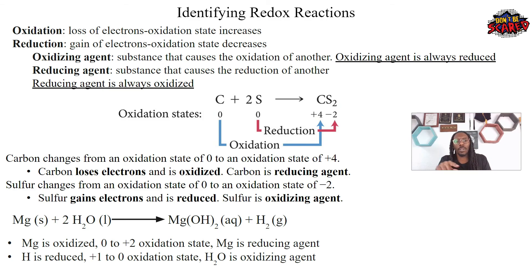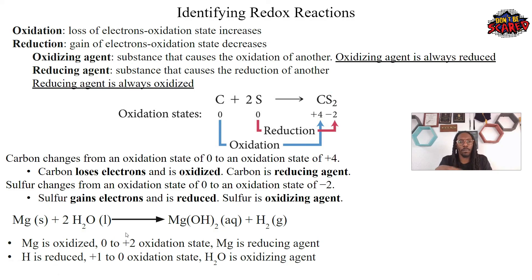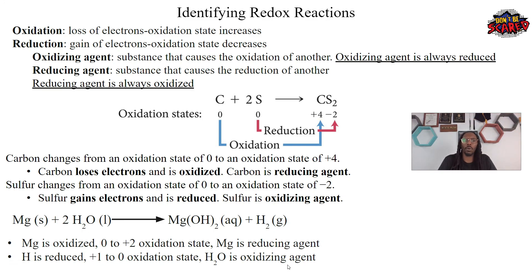We went from plus one to zero, so hydrogen is being reduced. Oxidizing agents are always reduced, and since hydrogen is being reduced, water is my oxidizing agent. That is how we identify our oxidizing agents and reducing agents in redox reactions.